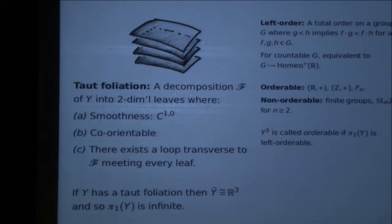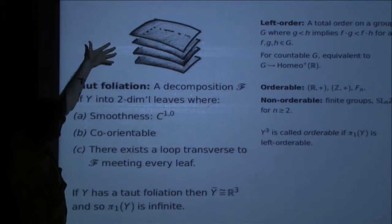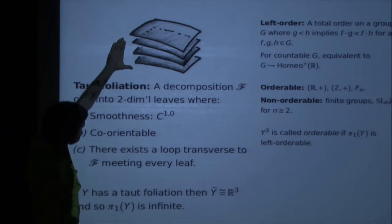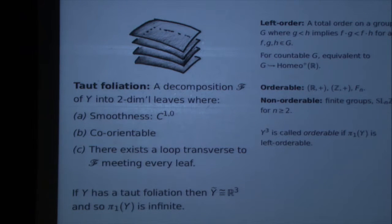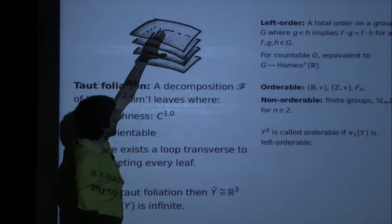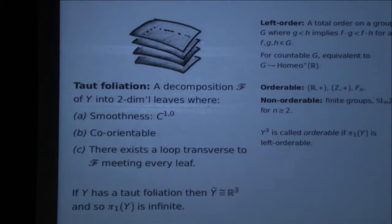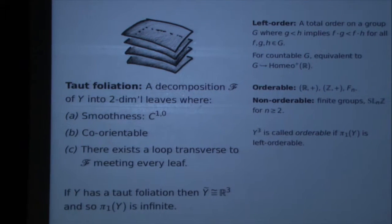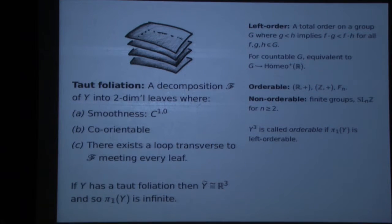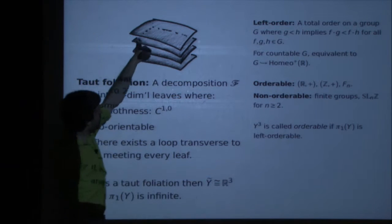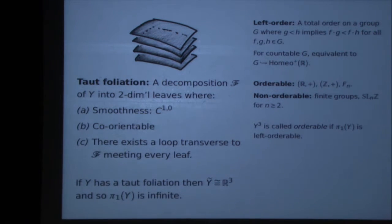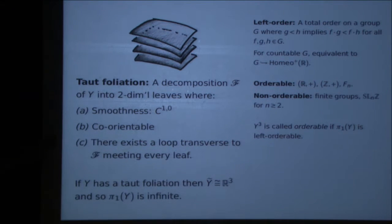The third member of our cast of characters, most closely connected to this workshop, is a taut foliation. A foliation in my talks will always have two-dimensional leaves — it's some partition of my three-manifold into subsets looking locally like this picture. In terms of smoothness, I only require that there's a well-defined tangent plane at every point, and that the tangent plane varies continuously as you move along the leaf. I'm also going to assume that taut foliations are co-orientable — this just saves me words later on.